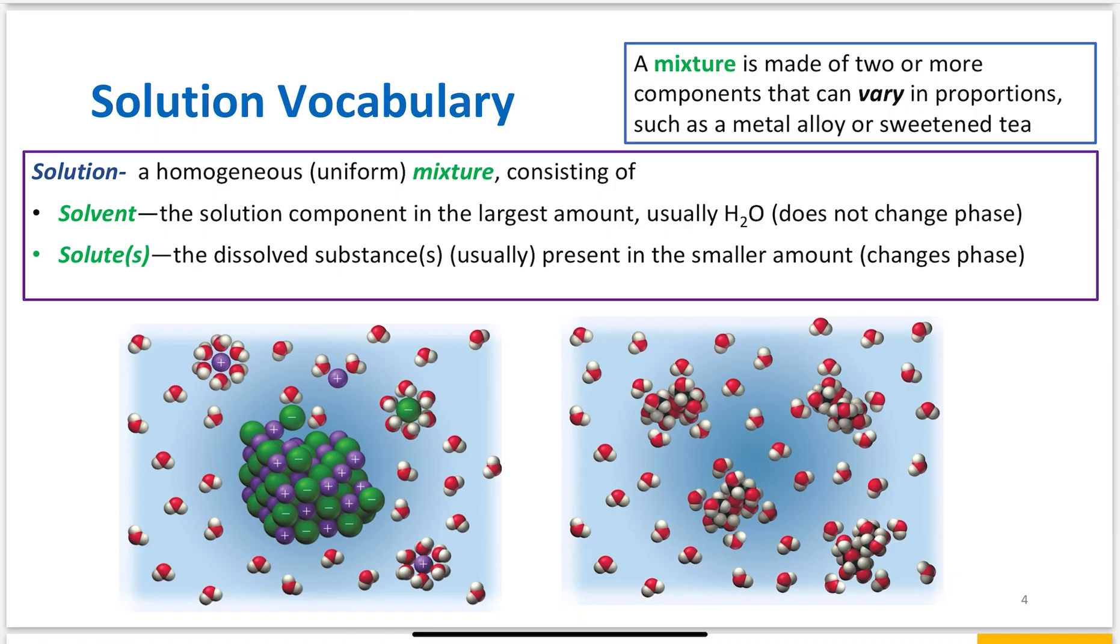Solvent and solute are also definitions you need to understand. A solvent is the solution component in the largest amount, usually water in gen chem. The reason I say usually present in the largest amount is that it is the species that does not change phase upon mixing. If I have two liquids mixing together, my solvent is the one present in greater quantity. But if I'm mixing a liquid and a solid, and the solid dissolves into liquid, even if the solid is present in greater amount, the liquid is still my solvent because it doesn't change phase.